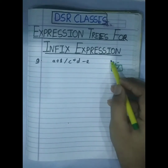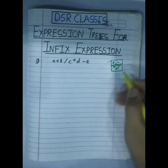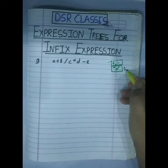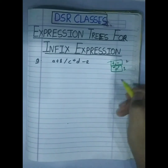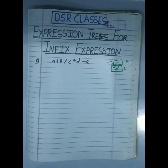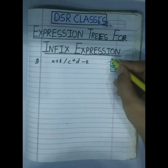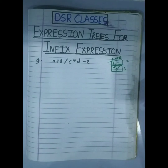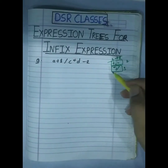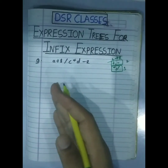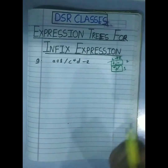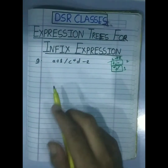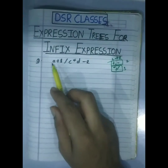Plus and minus have first priority, then multiply and divide. We know that the associativity for plus, minus, multiply, and divide is left to right. So our work is to scan the expression left to right.